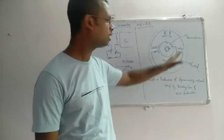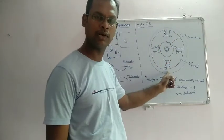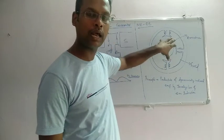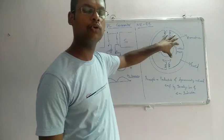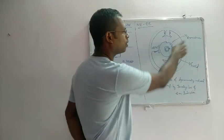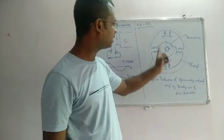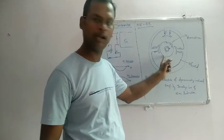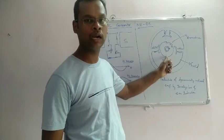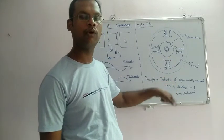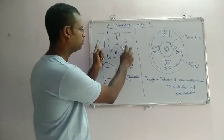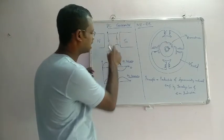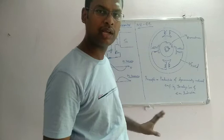In the construction, we have a stationary field system. When we supply current to it, there is a magnetic field. Inside this magnetic field, there is a moving part — the coil. That rotating part is called the armature. The coil is placed in the armature, which is the rotating part.